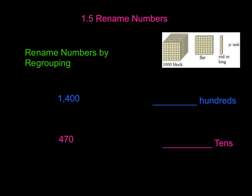So we're going to rename using those. I'm going to draw simple pictures of those blocks to represent these numbers when we regroup. The first thing here, we have our first number 1,400, and we're trying to figure out how many hundreds that is. So I'm going to draw a picture of it. Because we have 1,000, we are going to have one block.